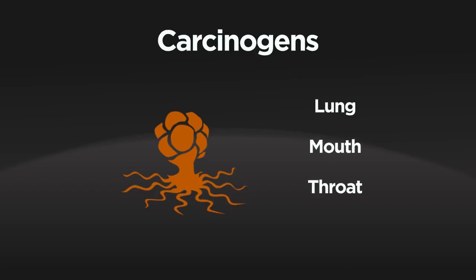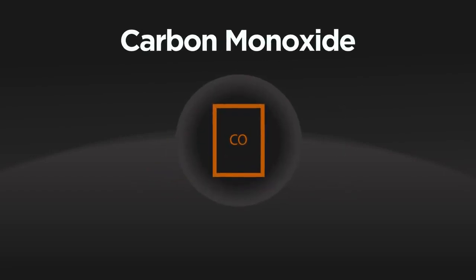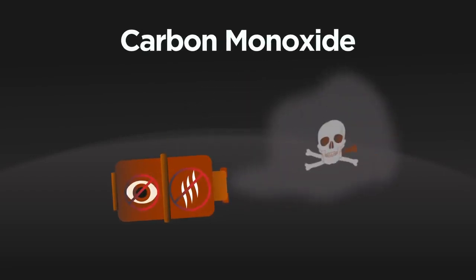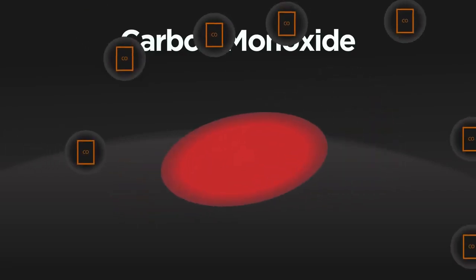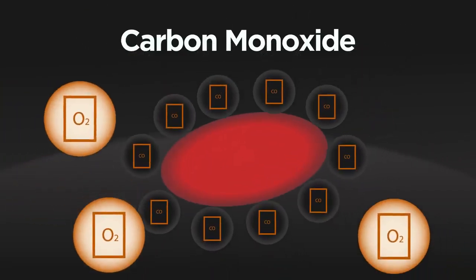The last culprit you need to know about is carbon monoxide. It is an odourless, colourless and extremely poisonous gas. The carbon monoxide permanently binds to the haemoglobin in your blood, blocking oxygen from binding.